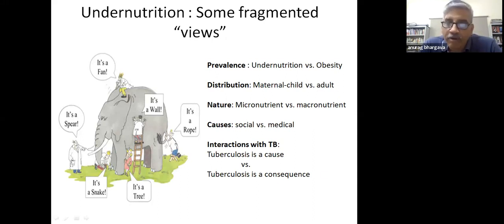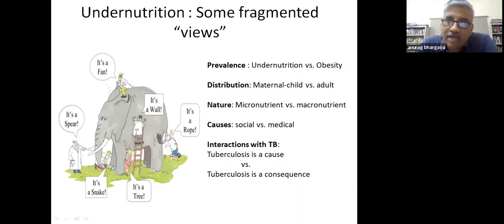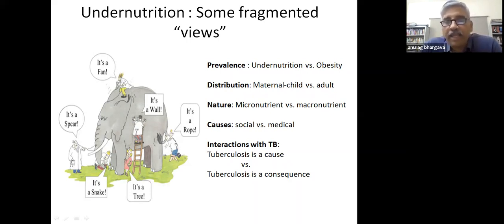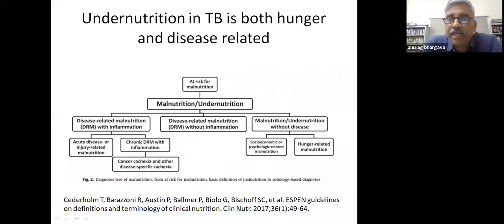There have been fragmented views on undernutrition: some emphasize the increasing prevalence of obesity rather than the persistence of undernutrition; some limit discussion to maternal and child nutrition while paying little attention to adult nutrition; micronutrient versus macronutrient is another artificial dichotomy. In the case of TB, it's important to recognize that undernutrition matters across age groups, both macro and micro nutrients are important, and TB is both a cause and consequence of undernutrition. The severe nutritional status seen in India combines hunger-related and disease-related malnutrition.